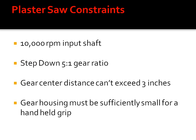Our plaster saw constraints include a 10,000 RPM input shaft, a step-down 5 to 1 gear ratio, the gear center distance cannot exceed 3 inches, and a gear housing must be sufficiently small for a handheld grip.